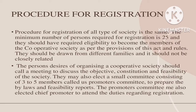Let's discuss the first part of our presentation. We need 25 people to register. The minimum number of persons required for registration is 25. These 25 members are from different families, and they can register as a cooperative society under the Co-operative Society Act.